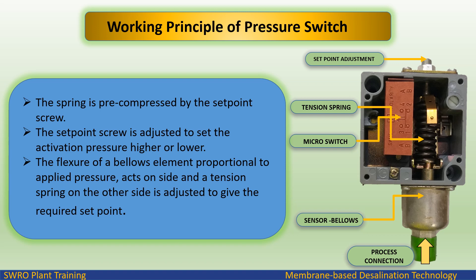The flexure of a bellows element is proportional to applied pressure. An axon side and a tension spring on the other side is adjusted to give the required set point.